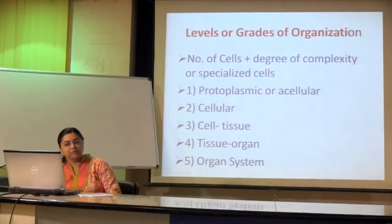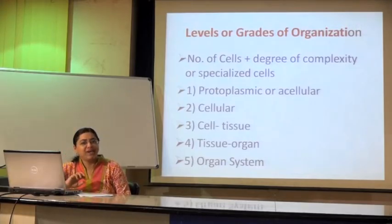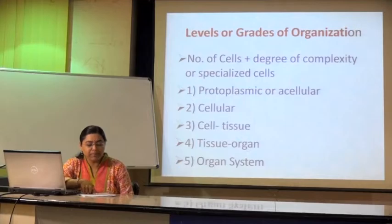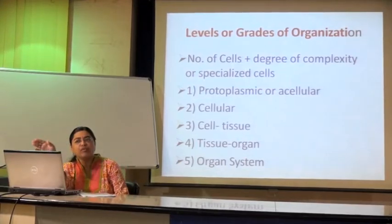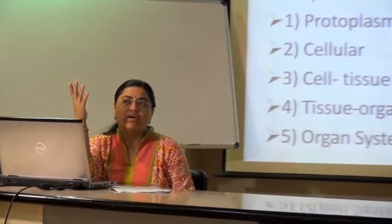You have cellular and cell-tissue grades of organization. Then comes the tissue-organ or tissue-organ-system grade, which you find in many groups — for example, your platyhelminthes, they are all going to be in tissue grade organization. And obviously organ-system grade is for higher organisms. What we consider here is the number of cells, the degree of complexity, how many specialized cells are available, and how many tissues are forming — accordingly you put them into different grades.